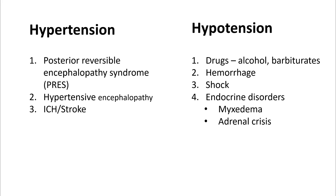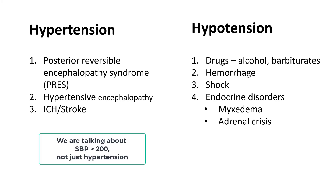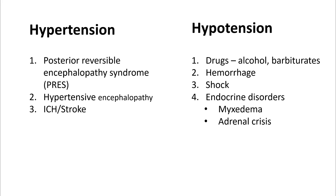Simple things like looking at blood pressure can give you some idea about the underlying etiologies. Patients with high blood pressure may possibly have posterior reversible encephalopathy syndrome or hypertensive encephalopathy. Patients with ICH and stroke can have high blood pressure as well. Hypotension is mostly seen in patients with shock — they may have underlying hemorrhage or drug abuse. Endocrine disorders like myxedema and adrenal crisis can also lead to lower blood pressures.